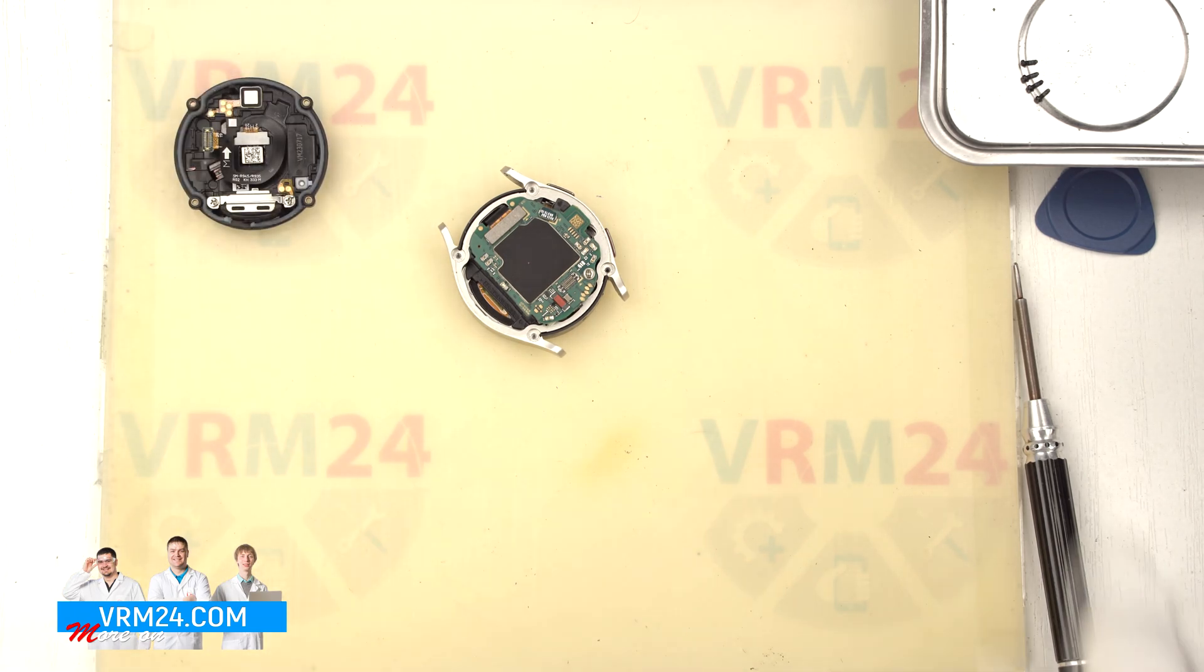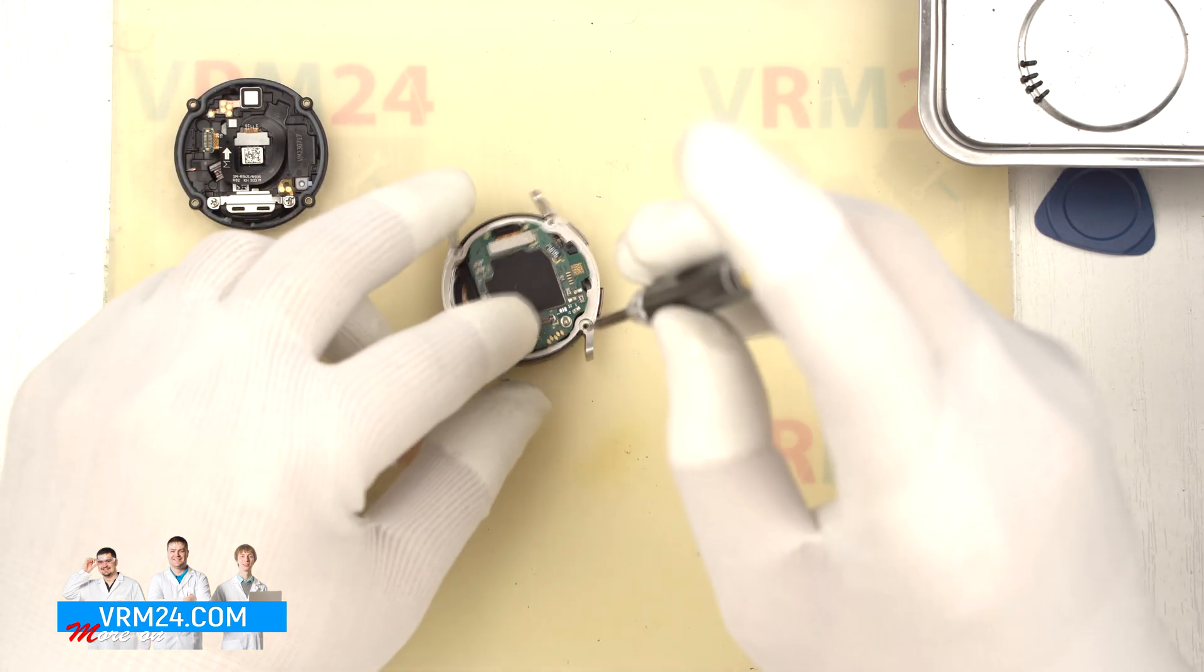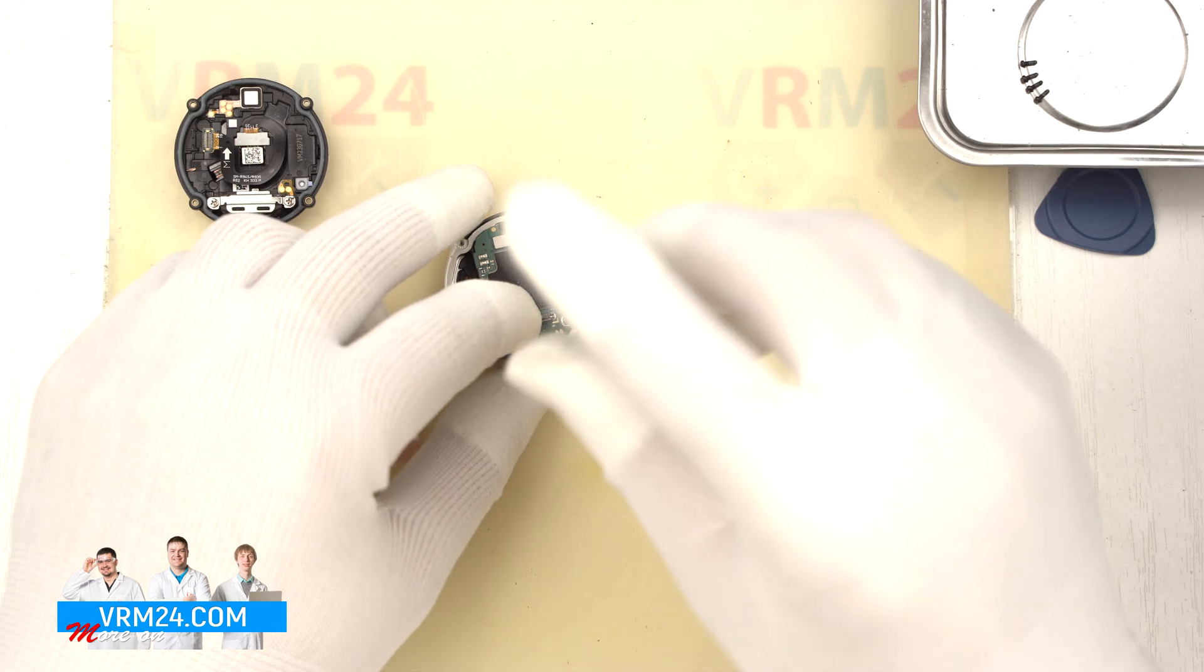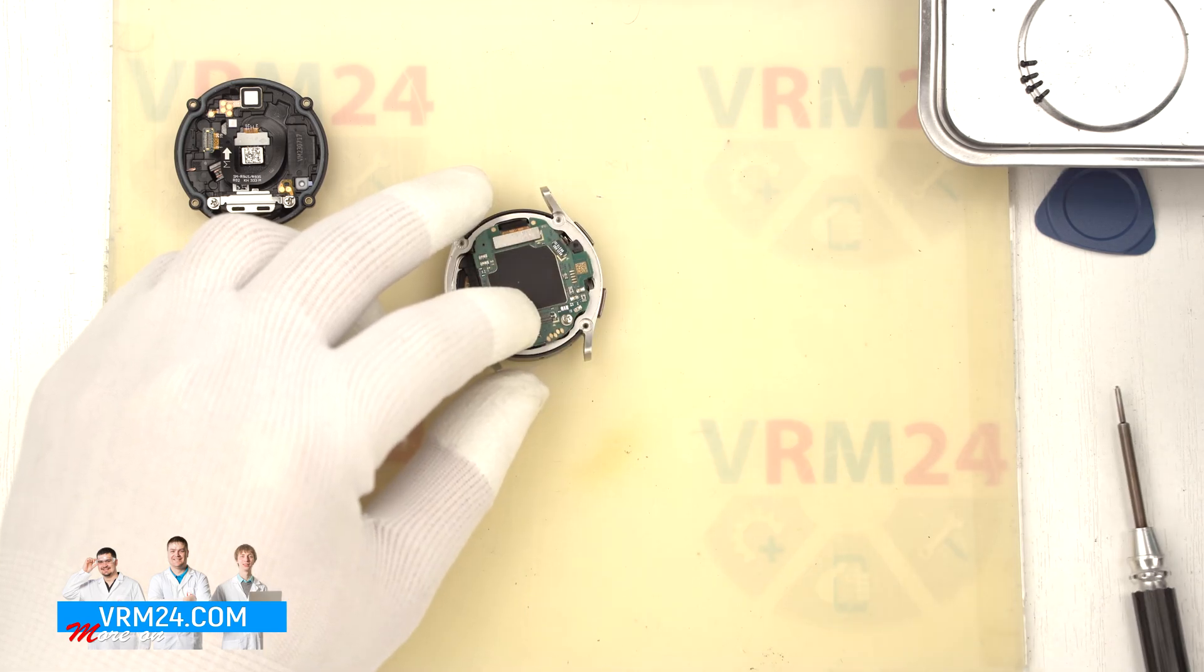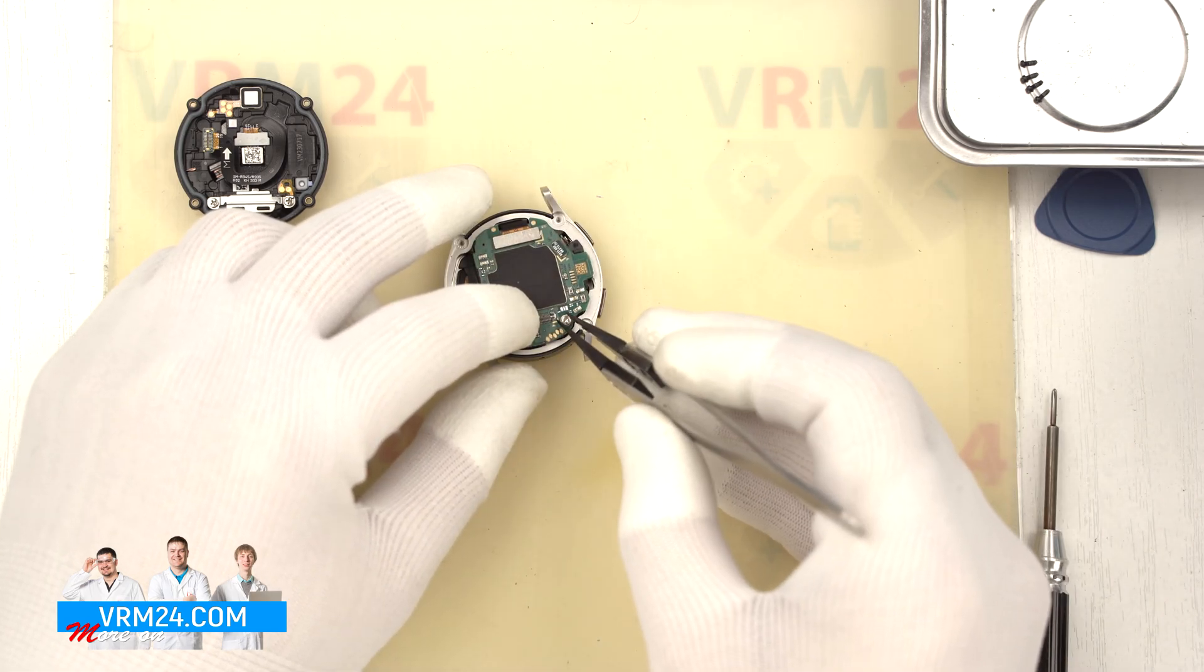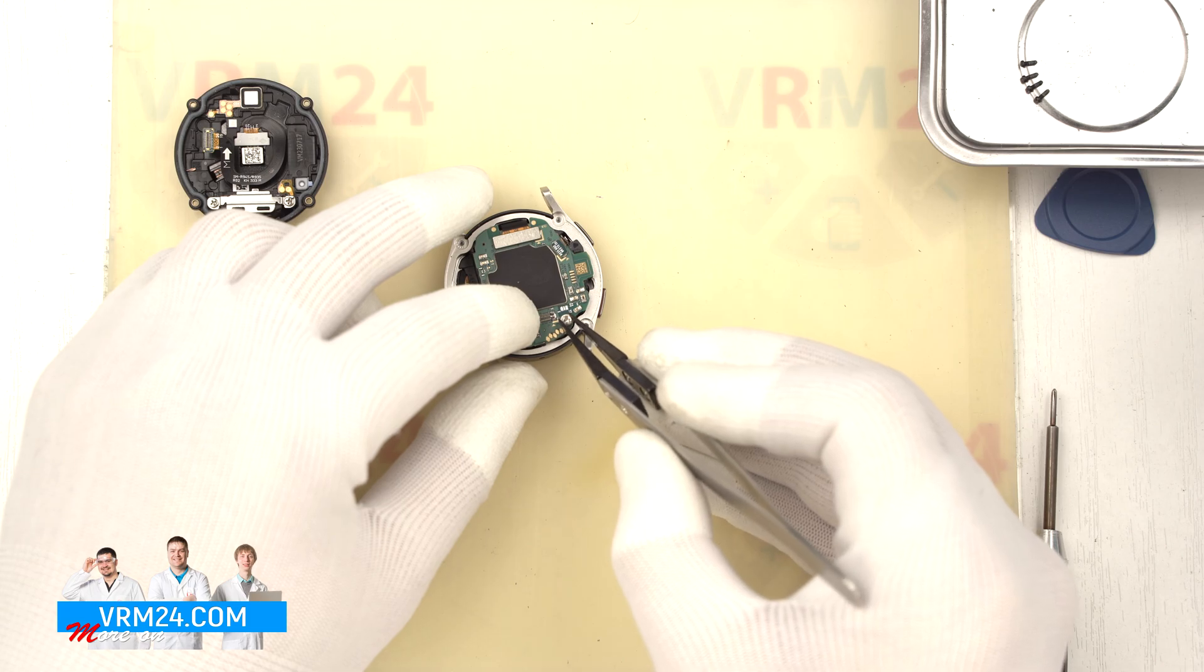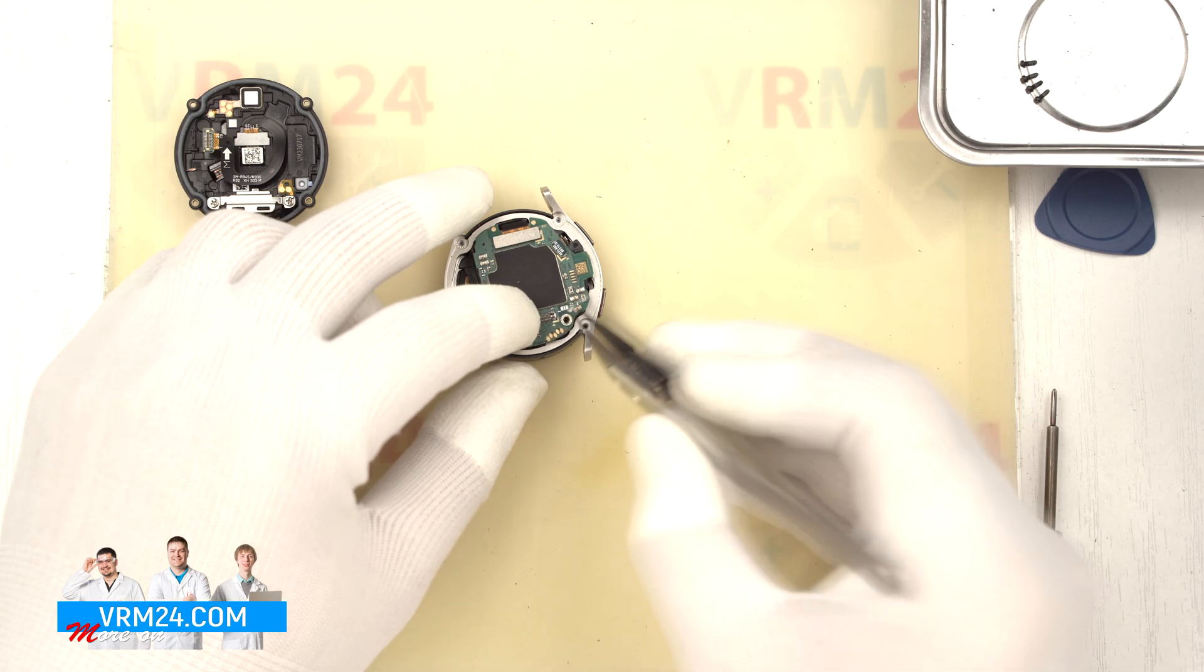After that we need to unscrew one screw that secures the motherboard to the frame. For this we are using a 1.5mm Phillips screwdriver or H3O Phillips. We carefully remove that screw and set it aside.